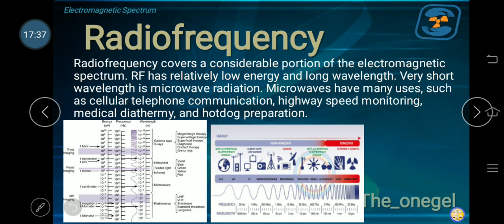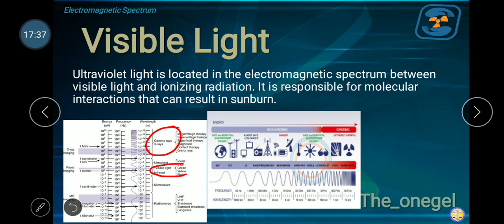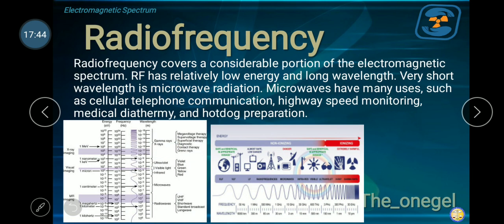Radio frequency. We're done with visible light and we've discussed the infrared and ultraviolet. Now, let's come to radio frequency. Typically, this is what you hear on radio, television. This is where it falls. Radio frequency covers a considerable portion of the electromagnetic spectrum. Radio frequency occupies a considerable amount. Very short wavelength in radio frequency is microwave radiation.